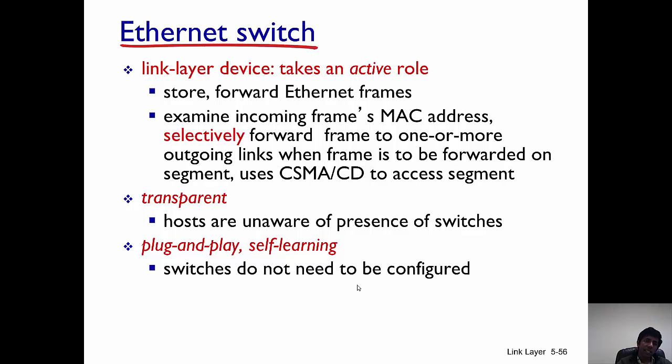So what's a link layer switch? It's a link layer device that takes an active role in forwarding and storing Ethernet frames. A switch examines an incoming frame's MAC address and selectively forwards this frame to one or more outgoing links. The switch is transparent, that is the hosts within the network are unaware of the presence of switches. A switch is also plug-and-play and self-learning, that is switches do not need to be configured.